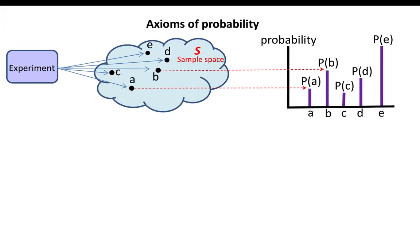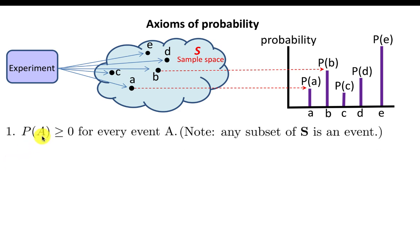I've already hinted what probability is — it's really a mapping from the sample space S. It takes elements of this sample space, which are events, and maps them into numbers P(A), P(B), P(C), P(D), P(E), etc. That mapping obeys certain obvious rules. The first rule is that the probability of an event A always has to be positive or zero. If P is zero, that means that event will never happen. Any subset of S is an event.